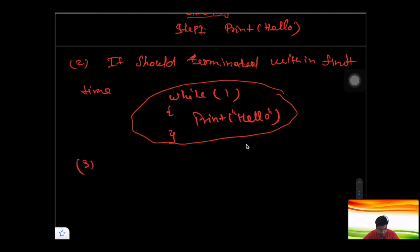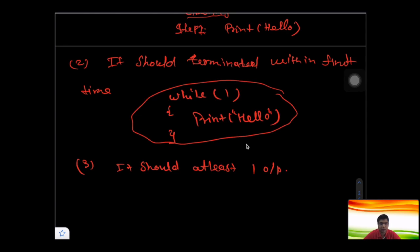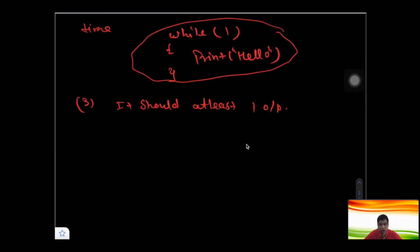The third property is: it should produce at least one output. If your algorithm does not produce any output, there is no meaning in writing it. So every algorithm must produce at least one output. These are the three properties of the algorithm.